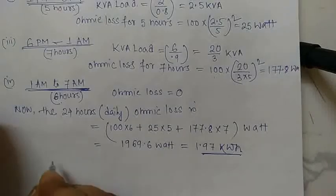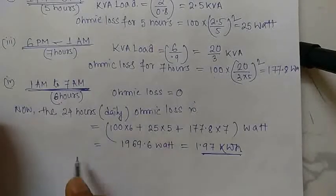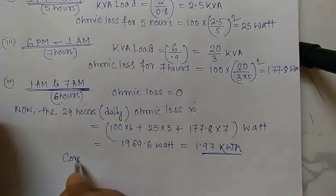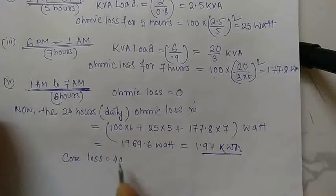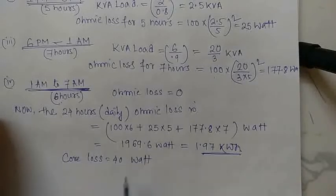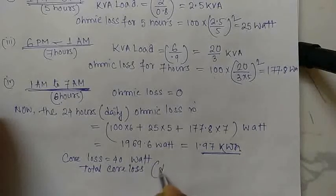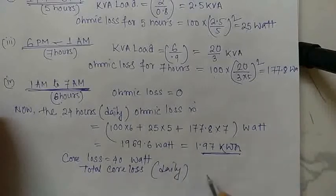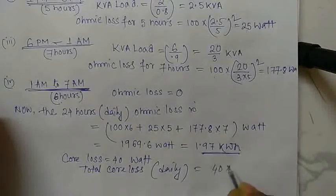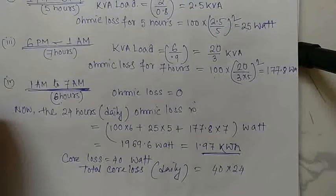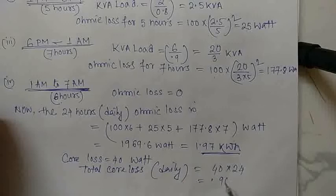The core loss is a fixed loss of 40 watts. So the total daily core loss is 40 × 24 = 0.960 kilowatt-hour.